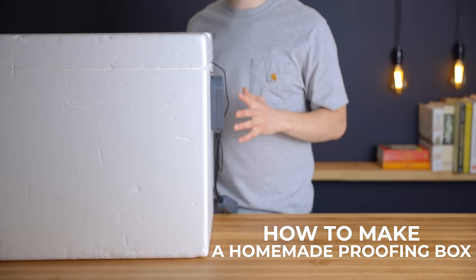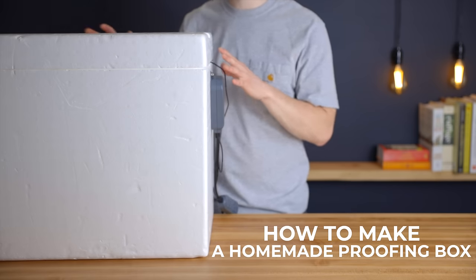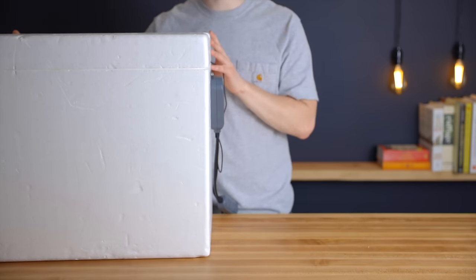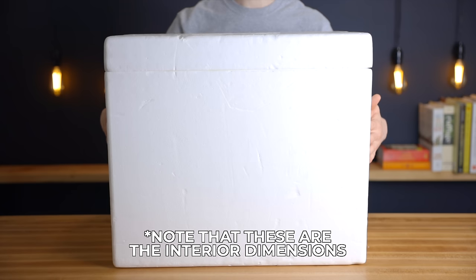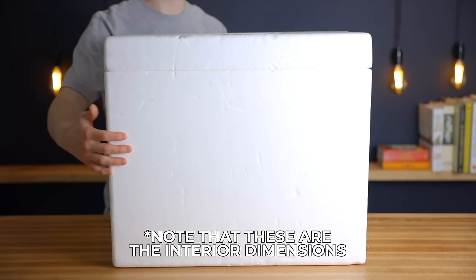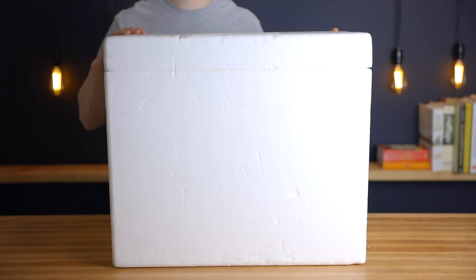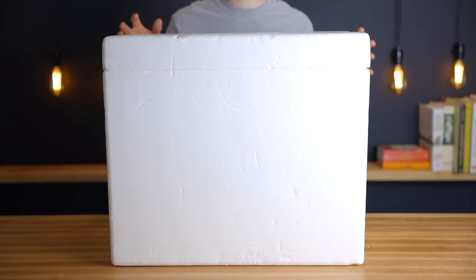So like I said there's only four components to this box and the first one is going to be this large styrofoam cooler. I just bought this one on Amazon and of course I'll link all the items that I used in the description below. So this one is 19 inches wide by 12 inches deep by 16 inches tall and this seems to be the perfect size for me and for a point of reference it'll exactly fit a standard half sheet cooling rack.